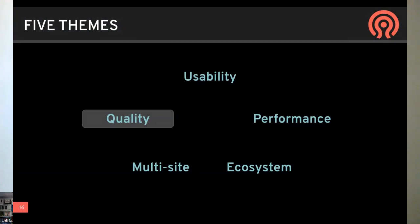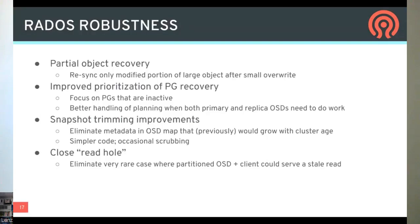That covers usability. Next, quality. There are a number of internal improvements within Ceph to improve robustness and performance. One is partial object recovery, which means you only recover the changed portion of an object — for example, for an RBD workload with lots of small writes, instead of re-syncing an entire 4-megabyte object, you only re-sync the 4K that was written. This can improve recovery speed significantly. There's also better prioritization during recovery, focusing on PGs that are inactive or more degraded, so the cluster becomes available and fully durable as soon as possible.